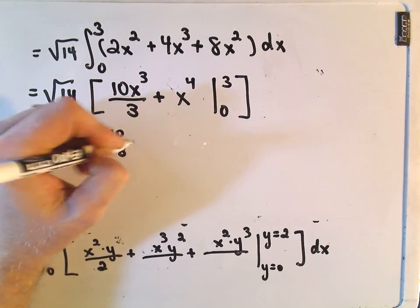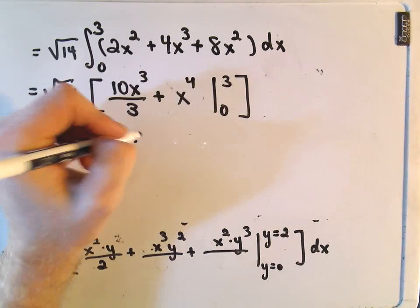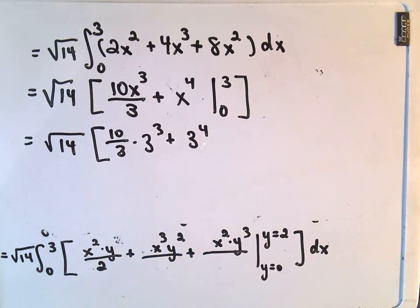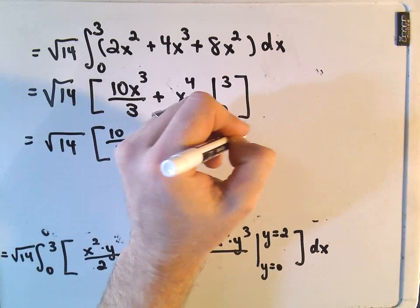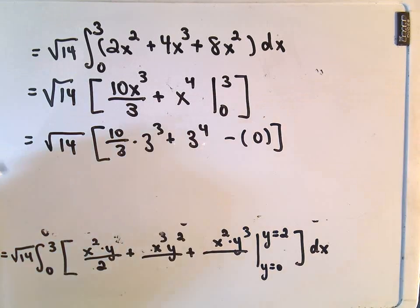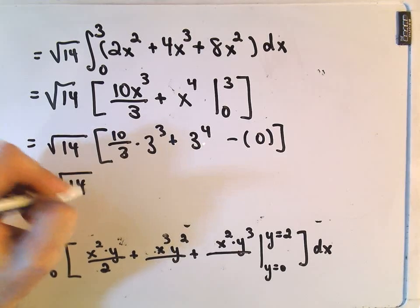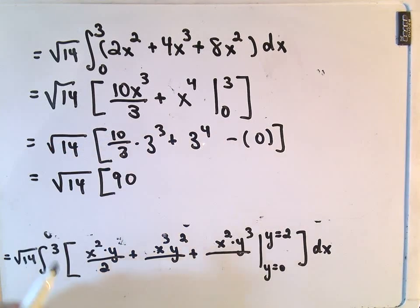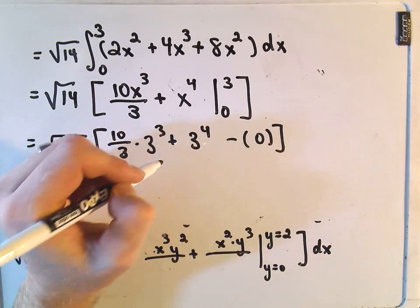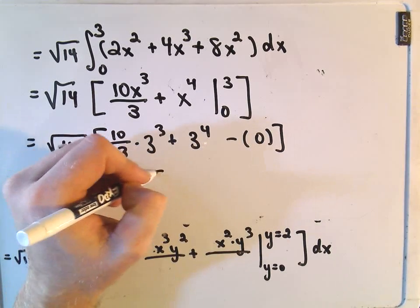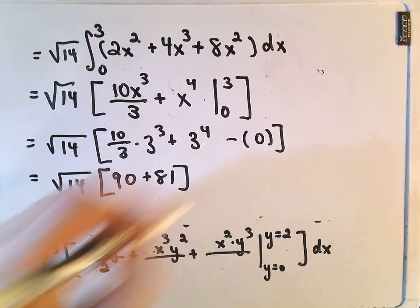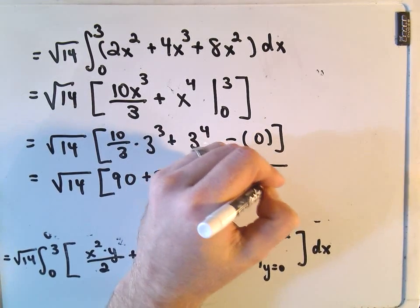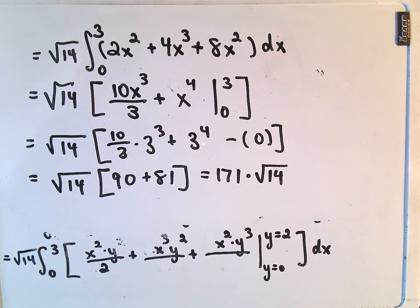We have (10/3)(3³) plus 3⁴. The lower limits are zeros. We've got √14 times [3² which is 9 times 10, or 90, plus 3⁴ which is 81]. So we're getting 171√14.